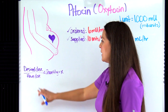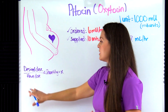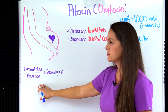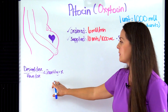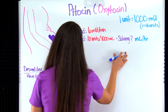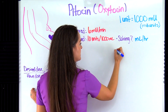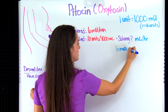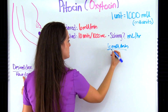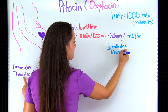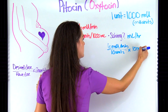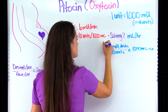Let's use our formula. The desired dose is the dose desired for the patient over the halve dose — what you have — times the quantity, which here is the volume amount, equals x. So we plug in: the desired dose is six milliunits per minute over the halve dose of 10 units, multiplied by the volume of 1000 mL, and that equals x. This is our first step.